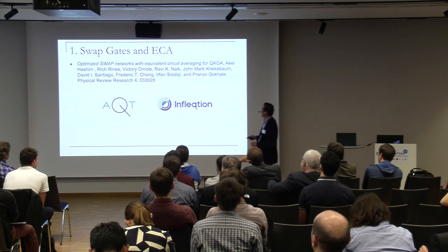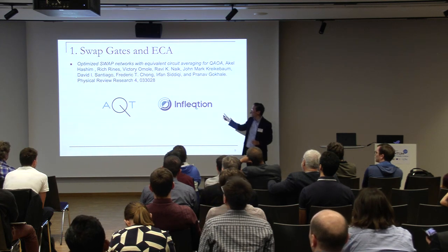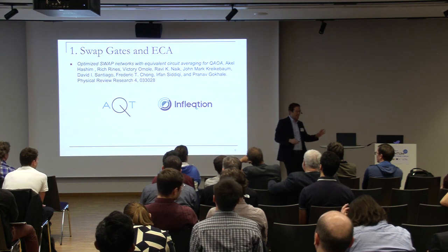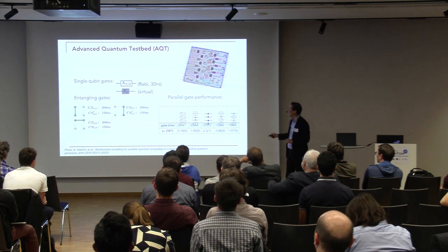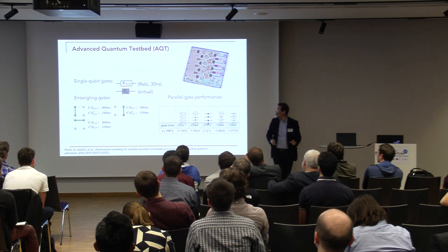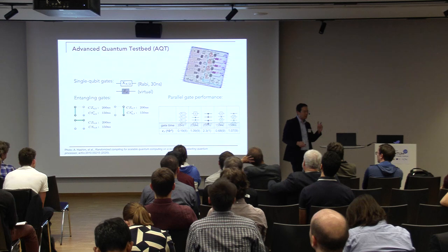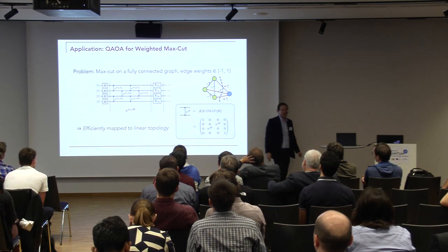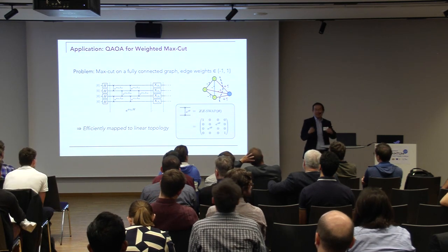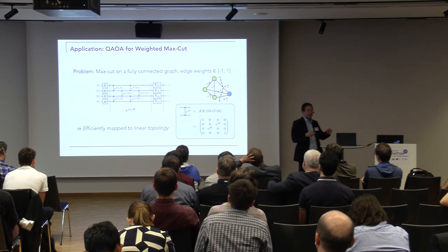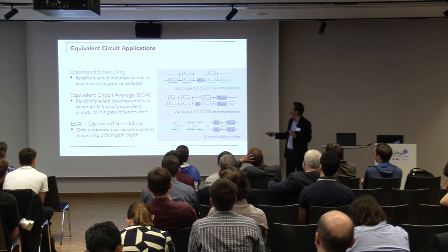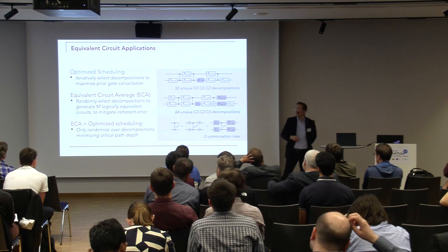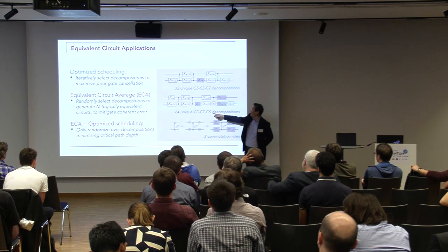Here's some work we did at Inflection with AQT — the Advanced Quantum Testbed at Lawrence Berkeley National Lab, a superconducting system. What I'll show is what you can do when you look at the native gate set. We're going to implement the iSWAP gate and do synthesis to get down to native gates. It turns out we can synthesize the ZZ-swap in many different ways: there are 32 decompositions using controlled-Z, 64 using controlled-Z and controlled-S, plus transformations on top of those — literally hundreds of different ways.